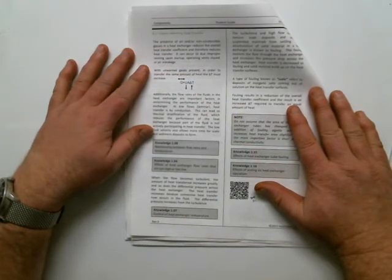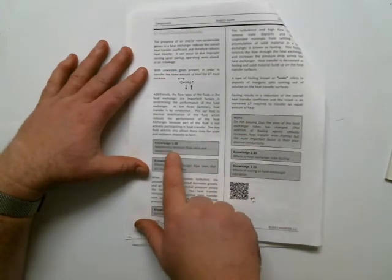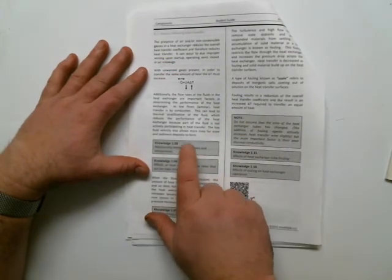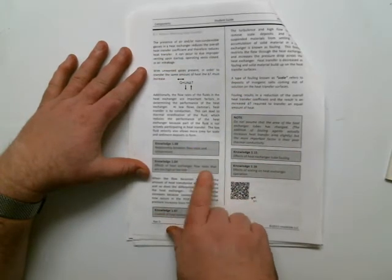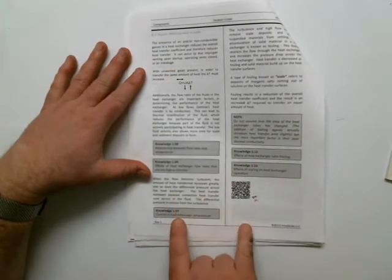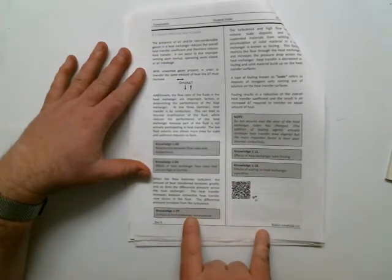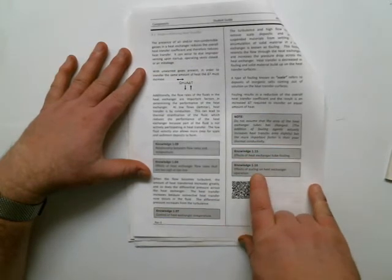And there are five knowledge requirements on this page alone, so we need to understand the relationship between flow rates in the heat exchanger and temperature. And that's going to be a little tricky because it's not necessarily intuitive. Then we're going to look at the effects of heat exchanger flow rates that are too high or too low and see what some problems can be. How do we actually control temperature in the heat exchanger? What are the effects of fouling in the heat exchanger and or scaling?